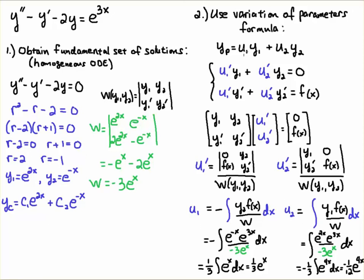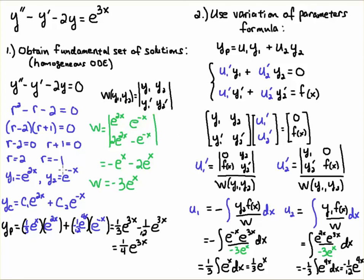We're not done yet — those terms have to be multiplied by the fundamental set of solutions to construct the particular solution. Writing the particular solution as u1·y1 + u2·y2: u1 = (1/3)e^x times y1 = e^(2x) gives (1/3)e^(3x); u2 = -(1/12)e^(4x) times y2 = e^(-x) gives -(1/12)e^(3x). Doing the fraction arithmetic: 4/12 - 1/12 = 3/12 = 1/4. So the particular solution is (1/4)e^(3x).